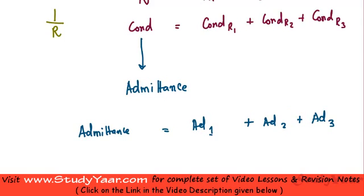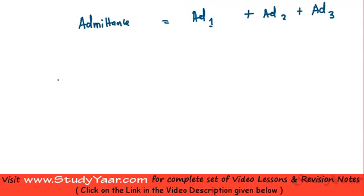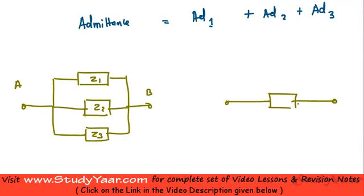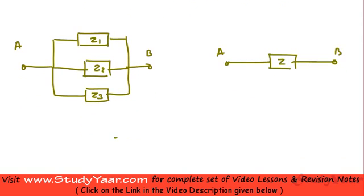Let's say you have impedances Z1, Z2, and Z3 connected in parallel across terminals A and B. You want to find the equivalent impedance Z. Your equivalent impedance is given by: Z inverse equals Z1 inverse plus Z2 inverse plus Z3 inverse.